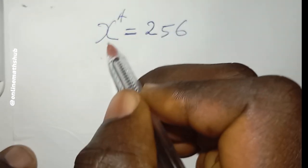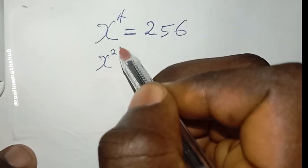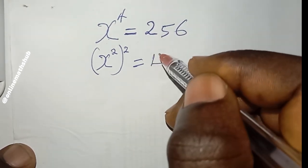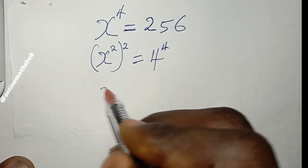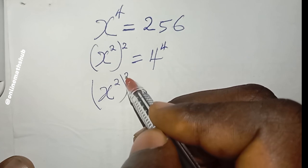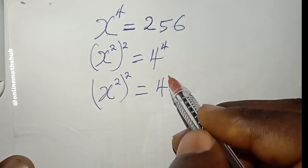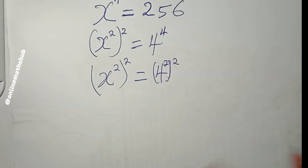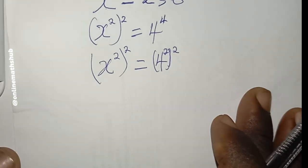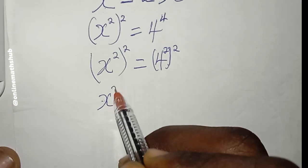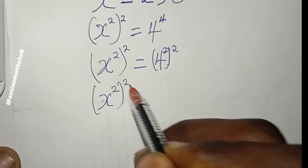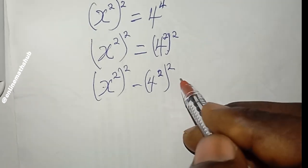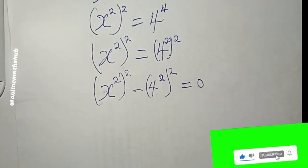Moving on, I can rewrite x to the power 4 as x squared, and then squared. And 256 can be written as 4 raised to the power 4, or equivalently 4 squared, and then squared. Bringing everything to the left-hand side, I have x squared to the power 2 minus 4 squared to the power 2, equal to zero.